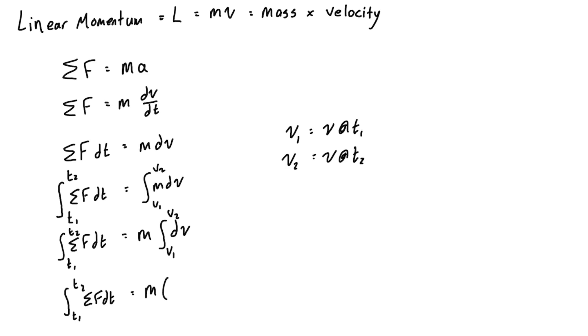If you want, you can distribute the m through the brackets there. We'll write the left hand side the same, t2 to t1, sum of forces dt, and then we'll change the right hand side to m v2 minus m v1. The first term is momentum at time 2 and the second term is momentum at time 1, because we just have mass times velocity and mass times velocity. This is at t1 and this is at t2. Really what we're seeing here is m v2, or momentum 2, minus momentum 1 is just equal to the change in momentum.